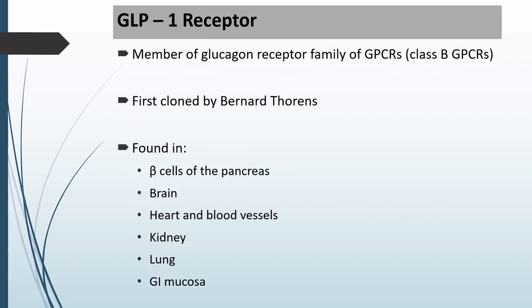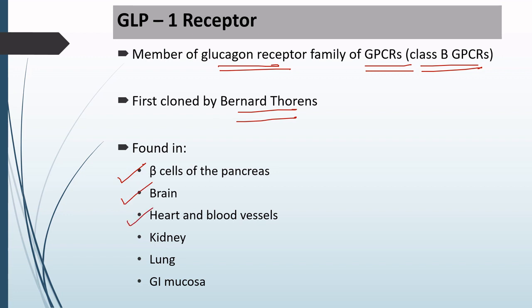The GLP-1 receptor is a member of the glucagon receptor family and is a GPCR — a G protein-coupled receptor — specifically a class B G protein-coupled receptor. GLP-1 was first cloned by Bernard Thorin. This GLP-1 receptor is found in the beta cells of the pancreas, in the brain, in the heart and blood vessels, kidney, lung, and the GI mucosa.